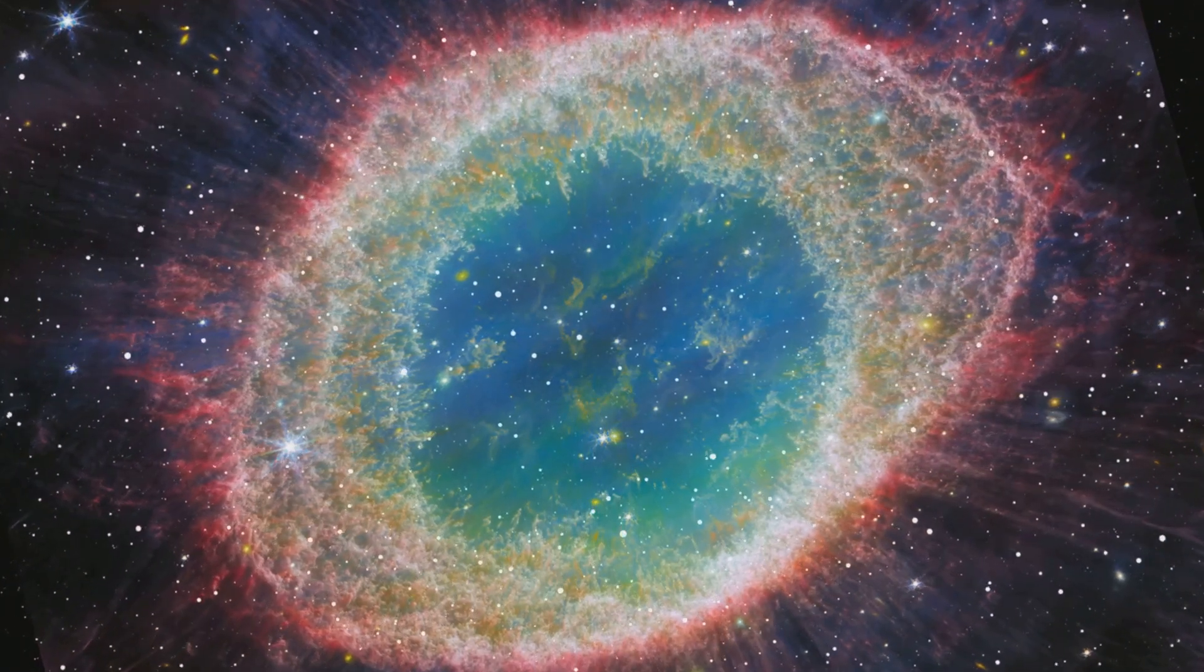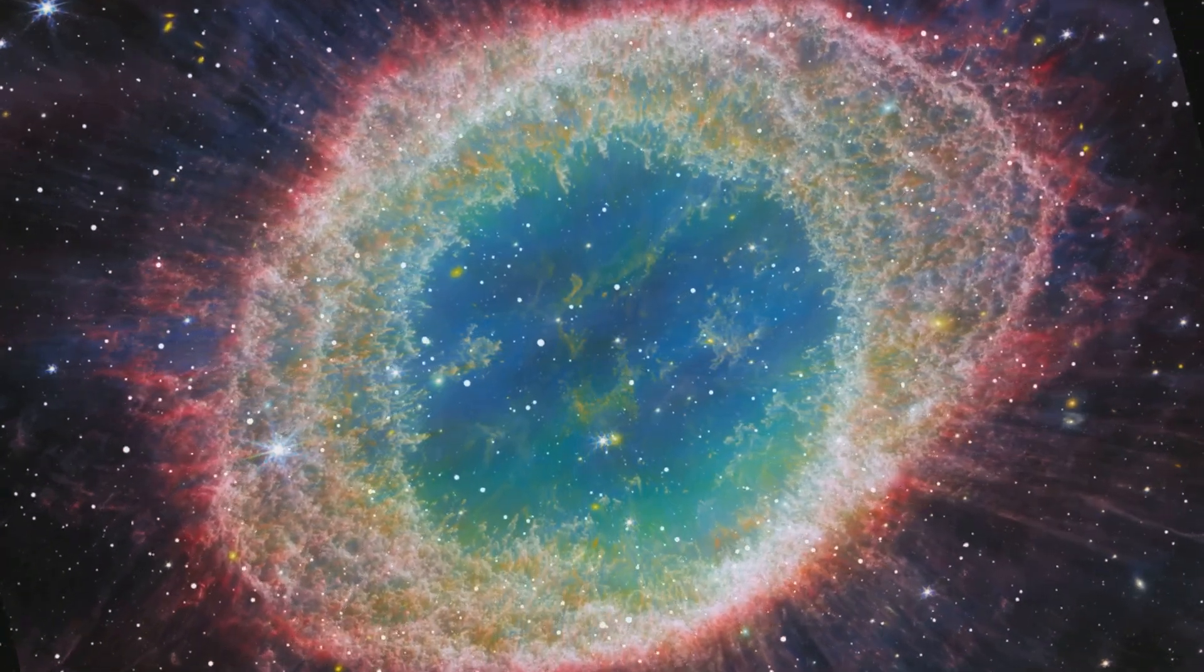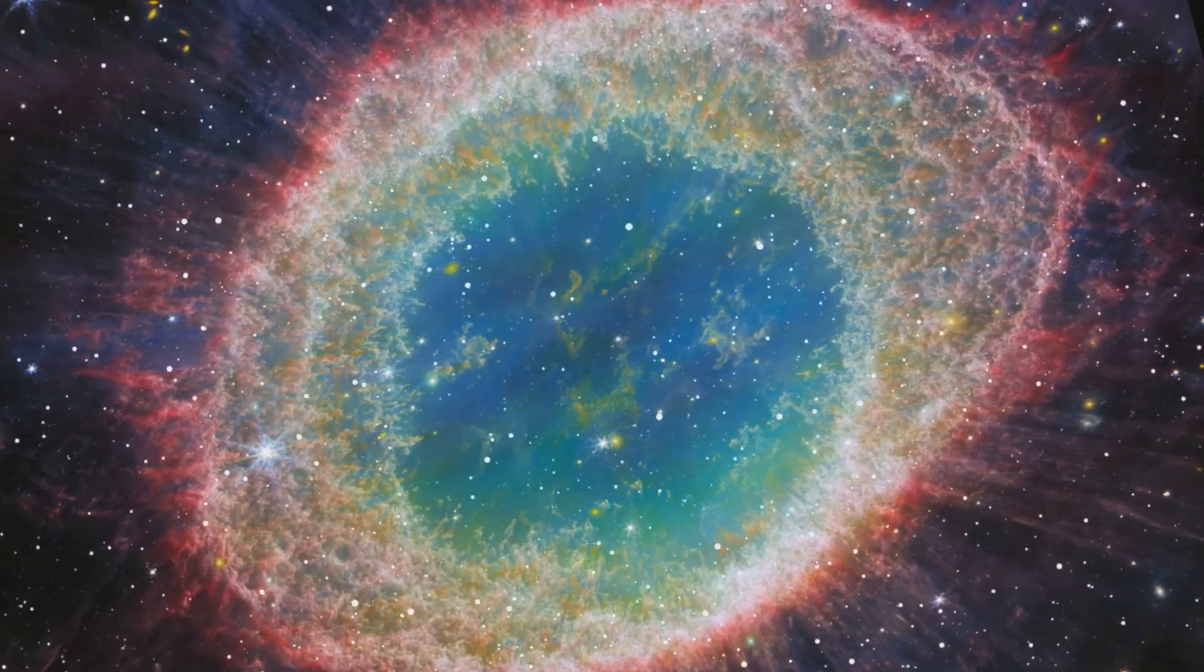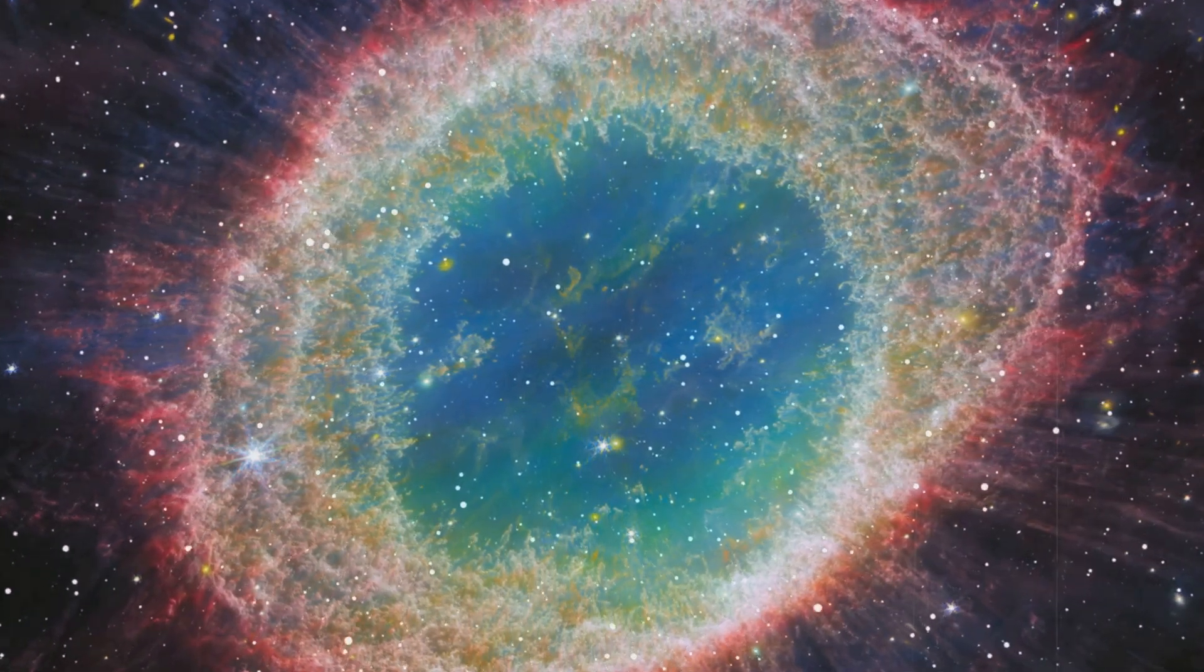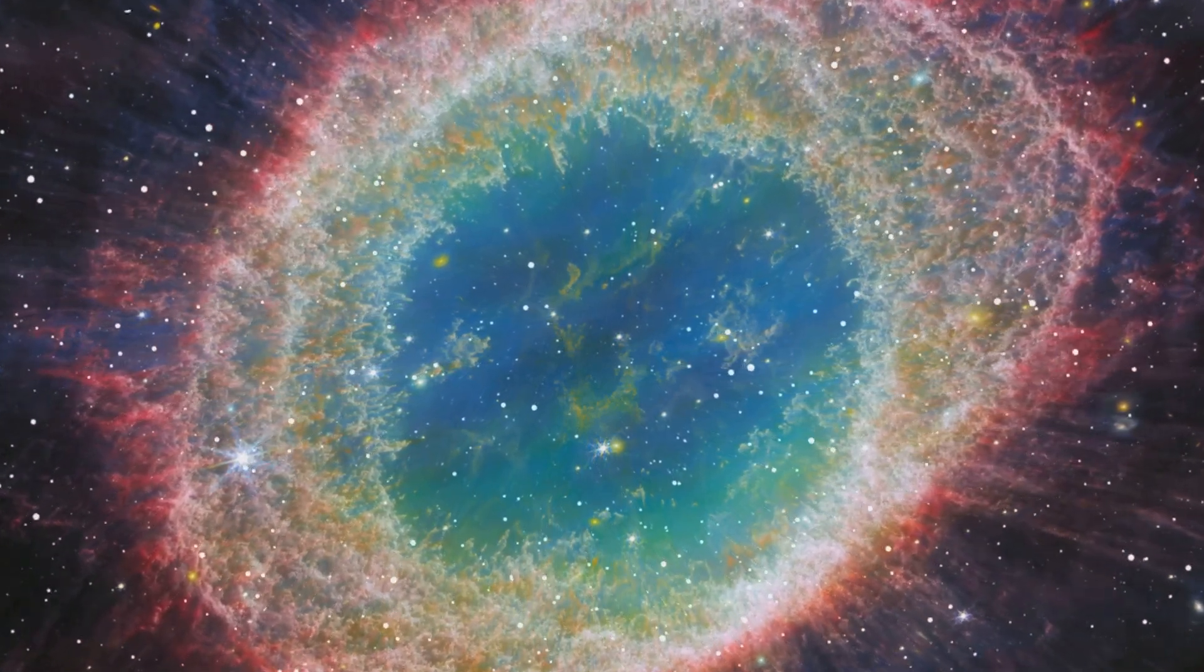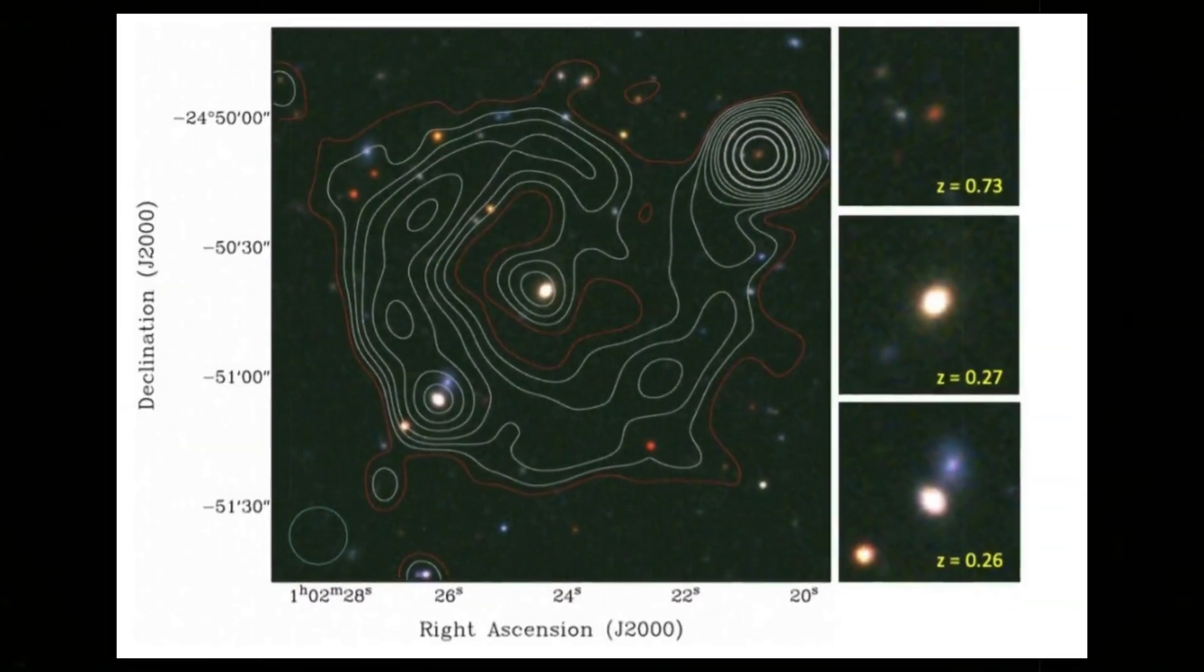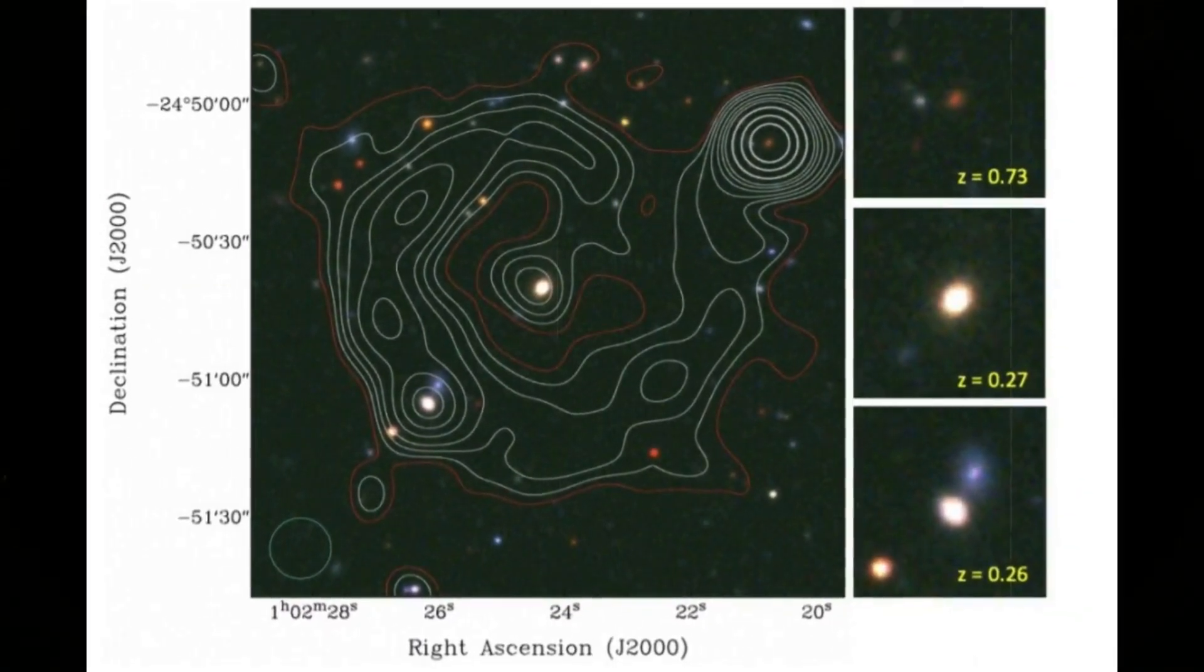The first descriptions of this anomaly came in cautious language. An unexpected circular radio feature. Diffuse emissions inconsistent with galactic activity. That kind of understatement hides the truth. No one knew what they were looking at. Imagine a faint ghostly ring in the dark, so wide that entire clusters of galaxies could fit inside it, yet so delicate that only the most sensitive detectors could trace its edges.